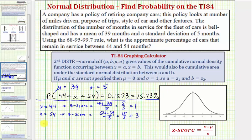So making the connection here, the percent or probability that x is greater than 44 and less than 54 is the same as the percent or probability that the z-score is greater than 1 and less than 3.